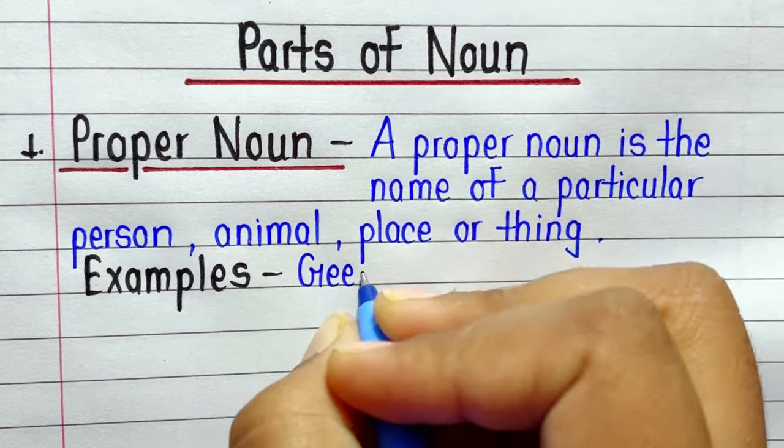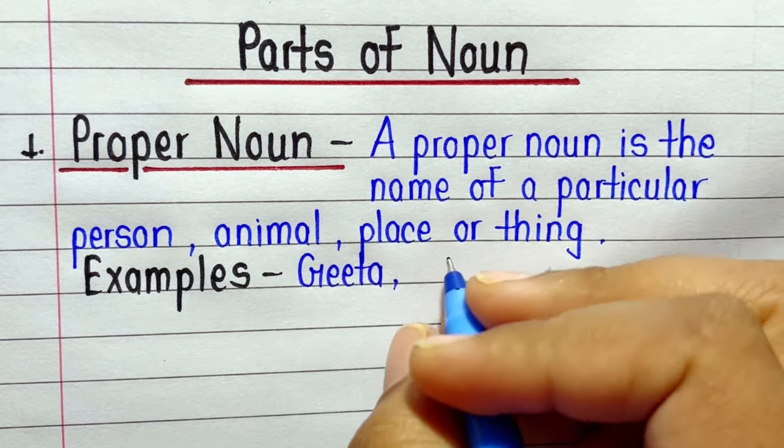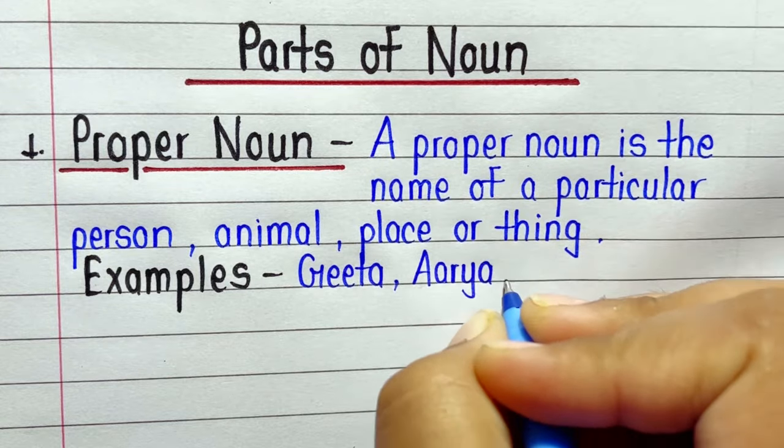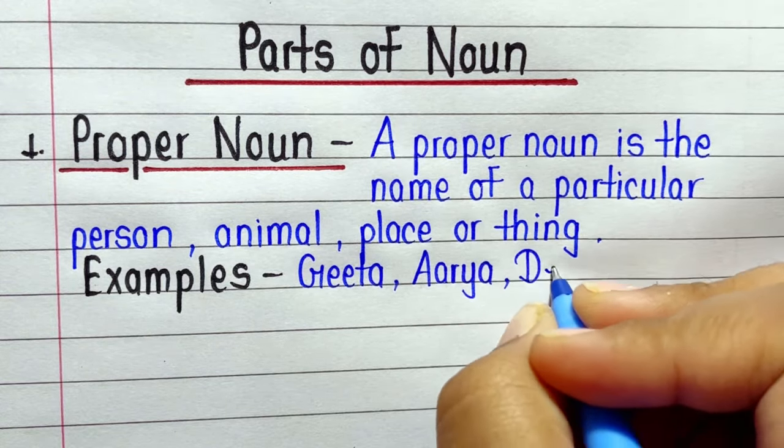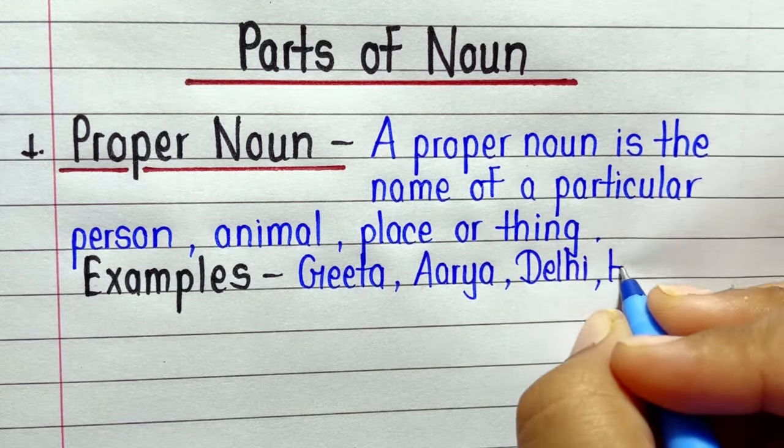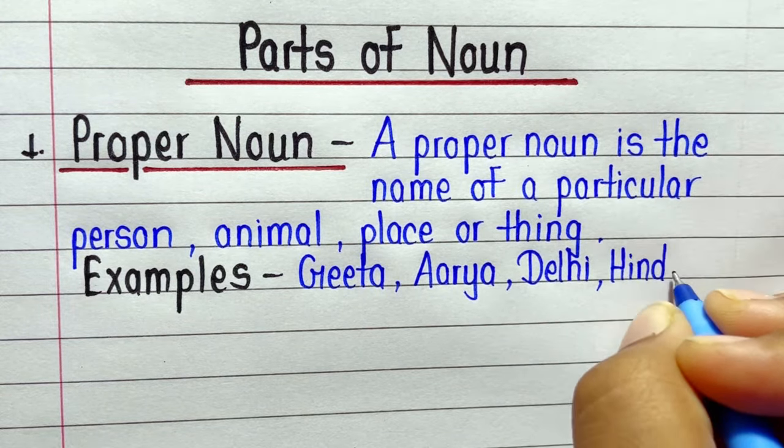Number one: Proper Noun. A proper noun is the name of a particular person, animal, place or thing. Examples: Geeta, Aarya, Delhi, Hindi, etc.